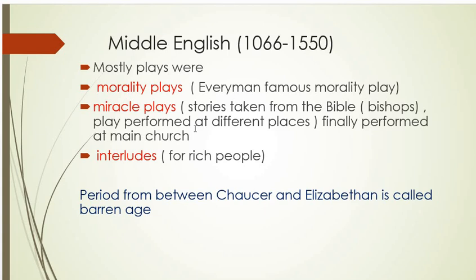The plays that were shown at that time were called Interludes — plays made for rich people, shown in their homes or in a special setting for wealthy people of that time. The period between Chaucer and Shakespeare — from approximately 1550 to 1603 — is called the Barren Age. Questions can also be asked about the Barren Age.